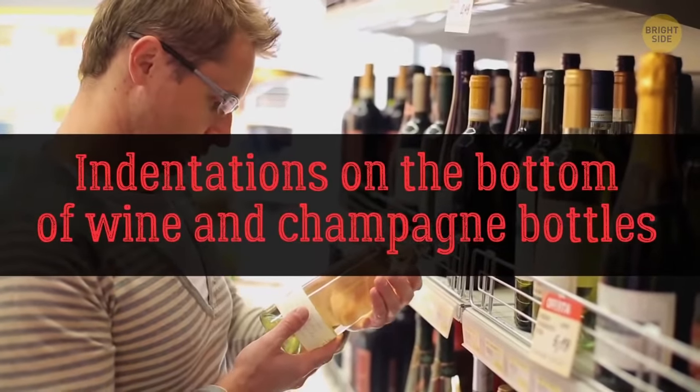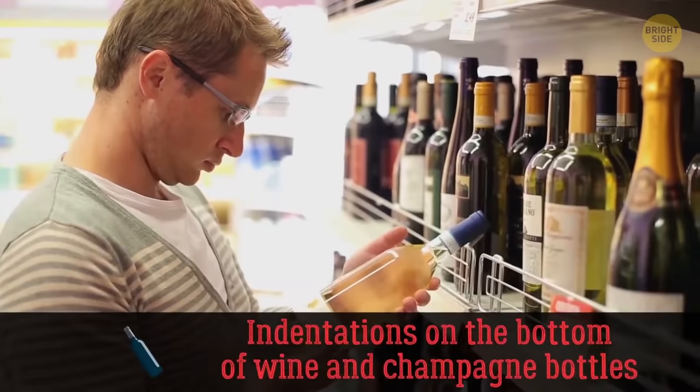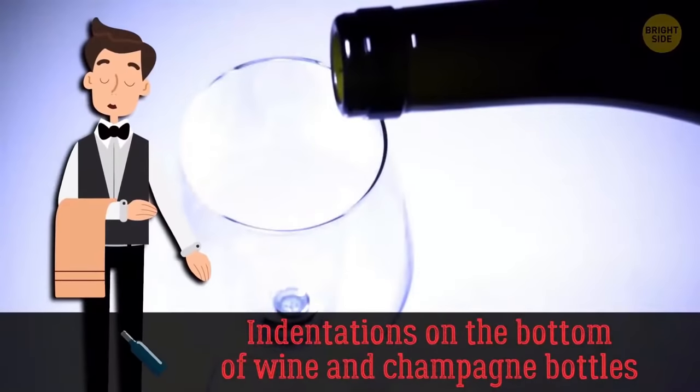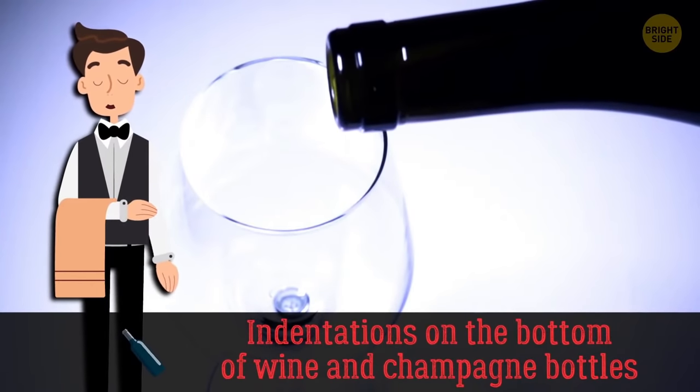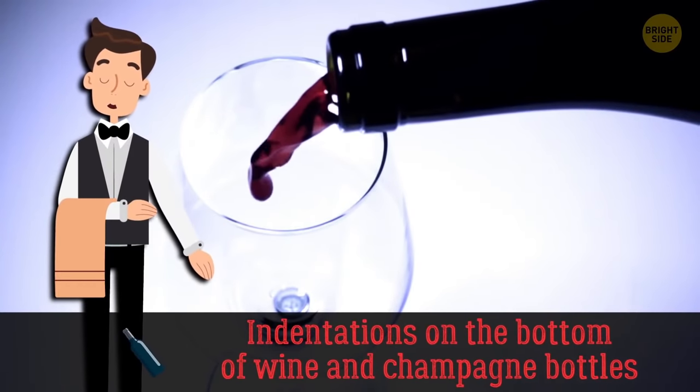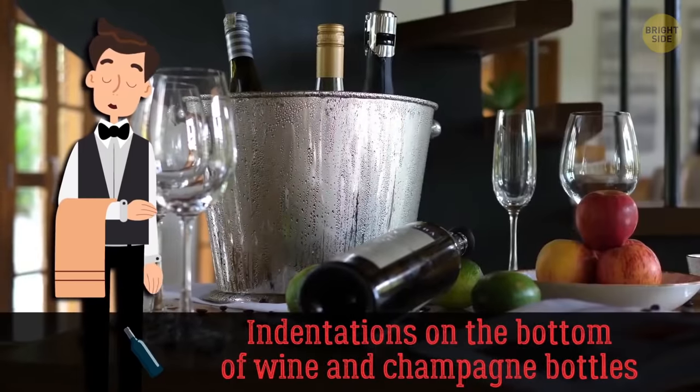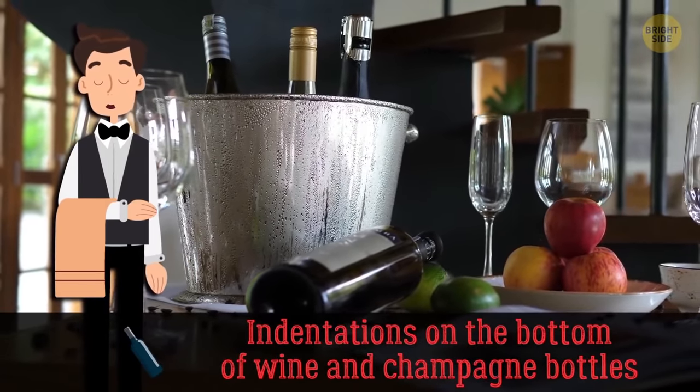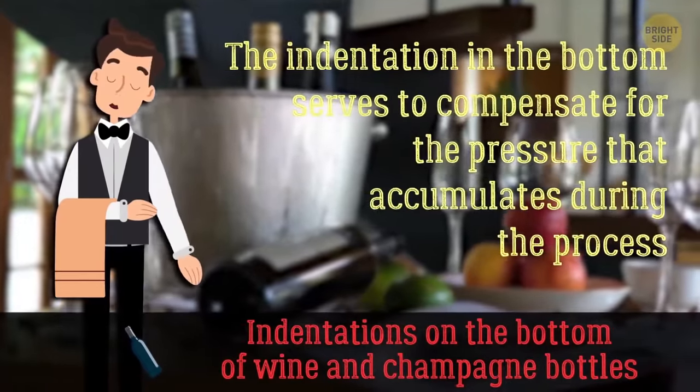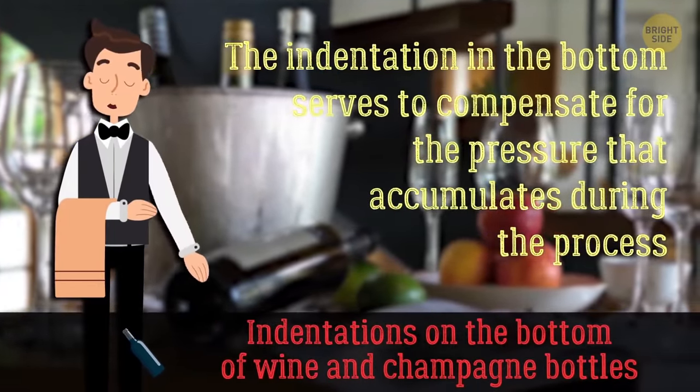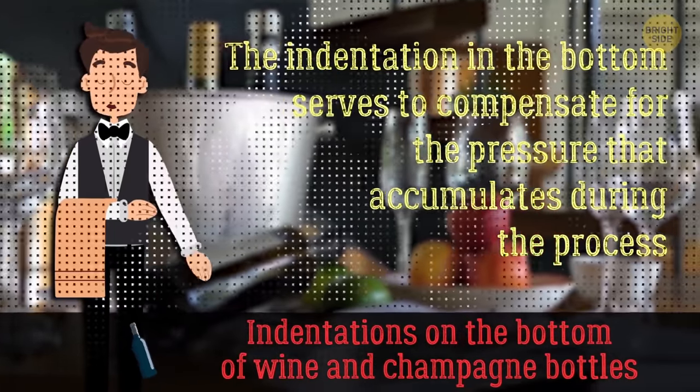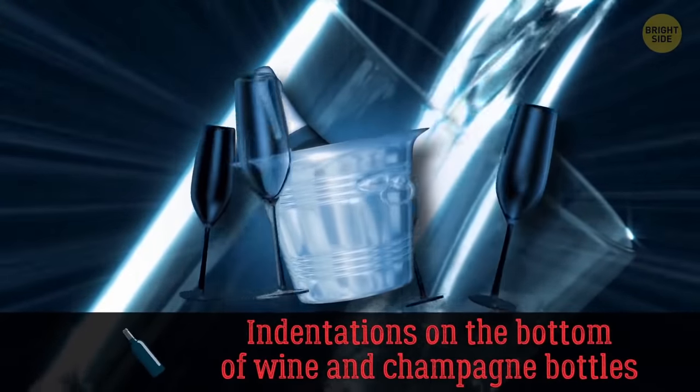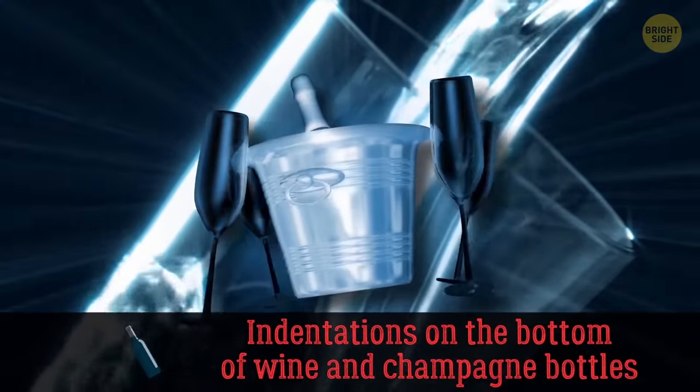Lots of people think that this is done so it's easier for the wine steward to grip the bottle when pouring drinks. While they might help out in this case, that's not why they exist. It's because the bottom and sides of a bottle are weaker and can crack when the bottle is being corked. The indentation in the bottom serves to compensate for the pressure that accumulates during the process. And that's exactly why champagne bottle indentations are much deeper, since they have more pressure due to the carbonation.